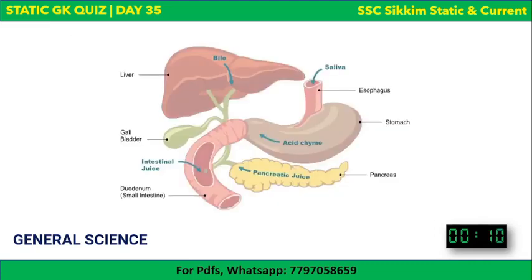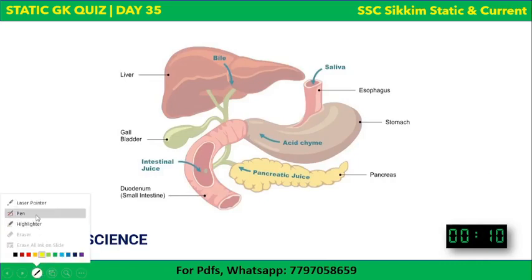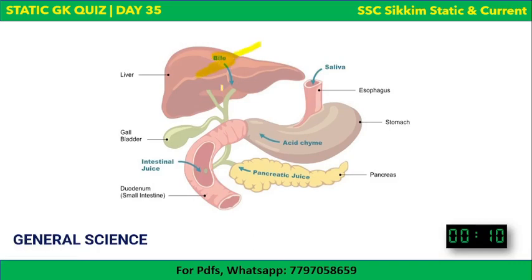Different organs produce different digestive juices: the liver produces bile, which is stored in the gallbladder; the stomach produces chyme and acid; the intestine produces intestinal juice; and the pancreas produces pancreatic juices. Food comes down through the esophagus.